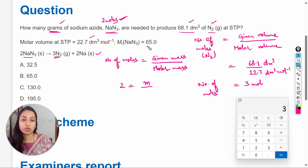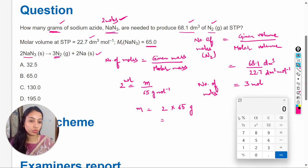The molar mass is given as 65 g/mol. So, mass equals 2 multiplied by 65. When we multiply moles by grams per mole, the units become grams.